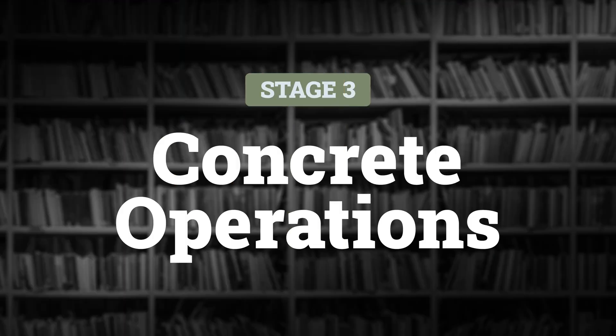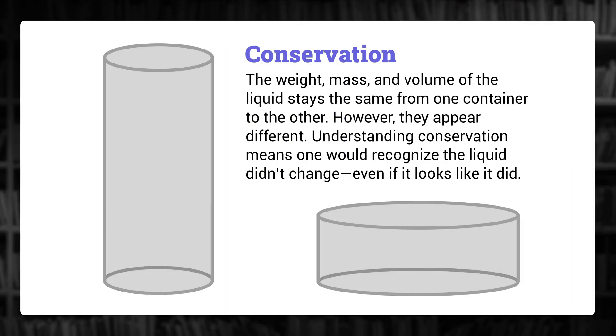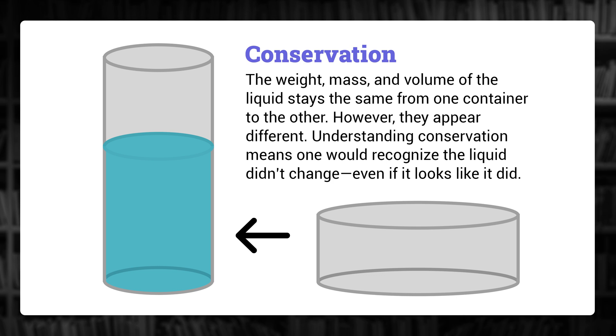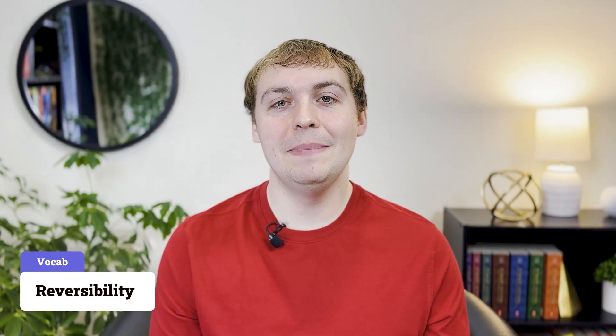The third stage is concrete operations, occurring from around 7 years old until 11 or 12 years old. At this stage, children begin to mentally manipulate objects to better understand a wide variety of things. A primary example is conservation — if liquid is moved from a short, wide container into a tall, skinny one, a child who has developed conservation understands the amount is the same. Piaget also believed children at this stage develop reversibility, meaning they can understand how something was done and mentally reverse or undo it.